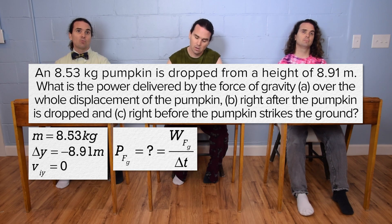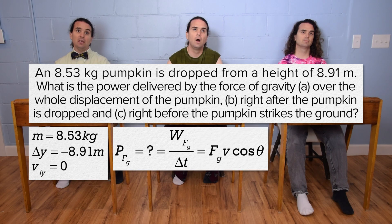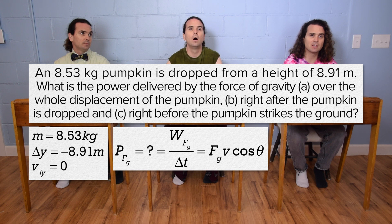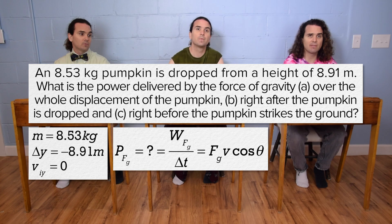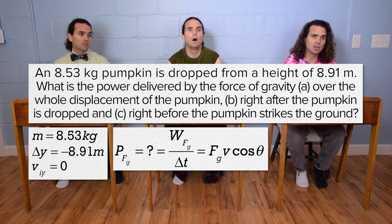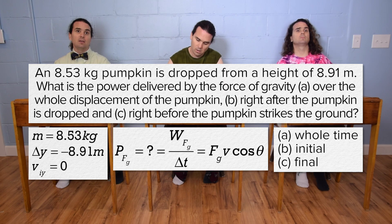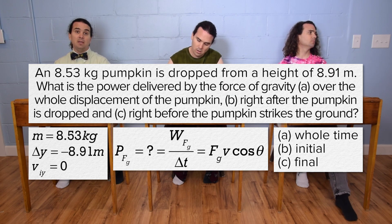Power delivered by the force of gravity equals work due to the force of gravity divided by change in time, and it also equals force of gravity times velocity times cosine beta. We are solving for: A, over the whole displacement of the pumpkin; B, right after the pumpkin is dropped; and C, right before the pumpkin strikes the ground. Part A is for the whole time, part B is initial, and part C is final.